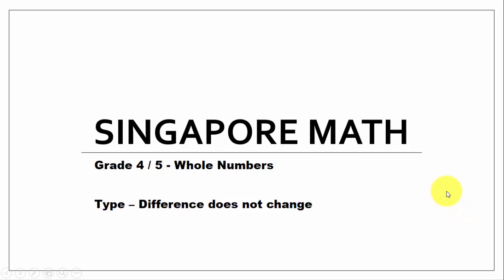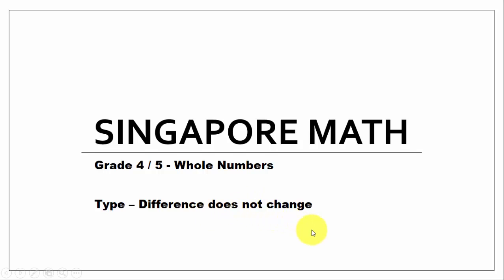Hi everyone, good to see you again. We are going to look at solving problems using Singapore math. This problem is applicable for grade 4 and grade 5 — they belong to the whole numbers category, and the type of problem to identify is 'the difference remains the same,' or 'difference does not change.' Let's see what that means.